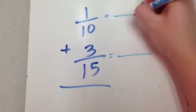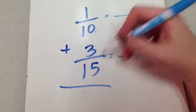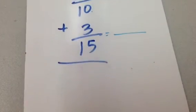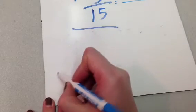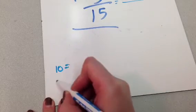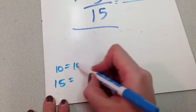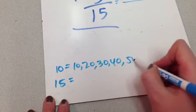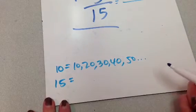Because these two numbers here are not the same. 10 and 15, not the same. So I do that by finding my multiples. Multiples of 10, multiples of 15. 10's are easy. 10, 20, 30, 40, 50. Dot, dot, dot. Right? On and on forever.